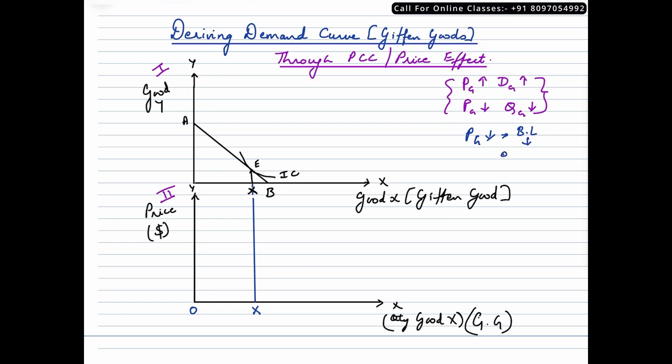Let me write rotate outwards. Okay, let's rotate the budget line outwards. Let us say this is AB1. Now we are assuming this particular scenario where price of a Giffen good falls and the quantity consumed by the consumer of this Giffen good also tends to fall.